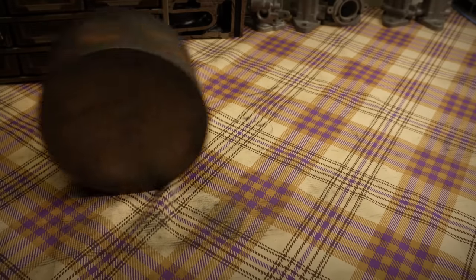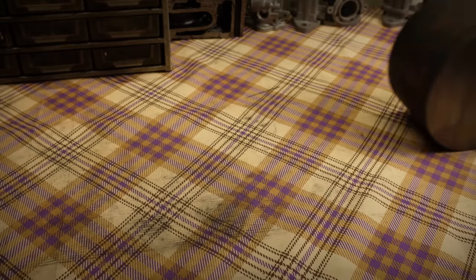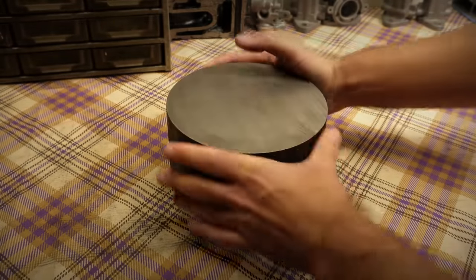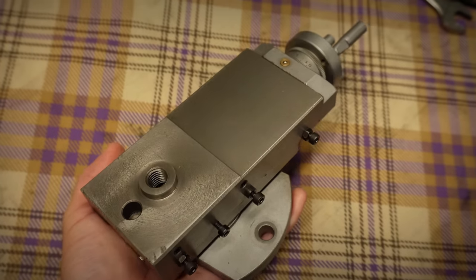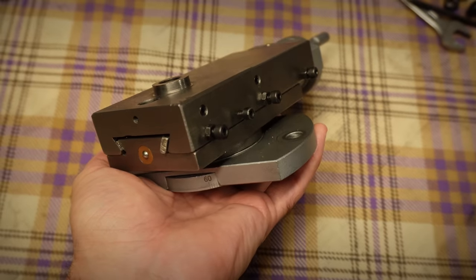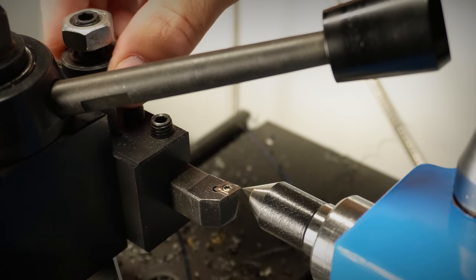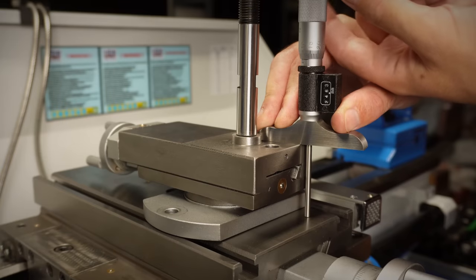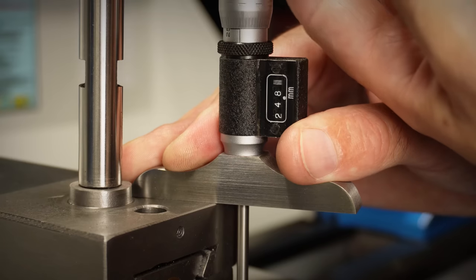So today we're going to take the first step to improve this operation, and that is making a solid tool post mounting block. This will replace the compound for most operations, but I still want to be able to bring it back easily whenever needed, and that means not readjusting any tool's height. For that reason the riser block needs to be at the exact same height as the compound.